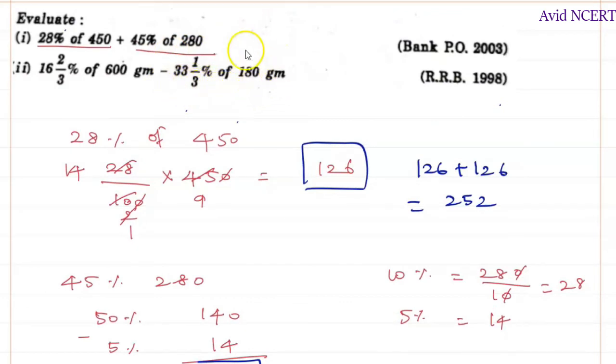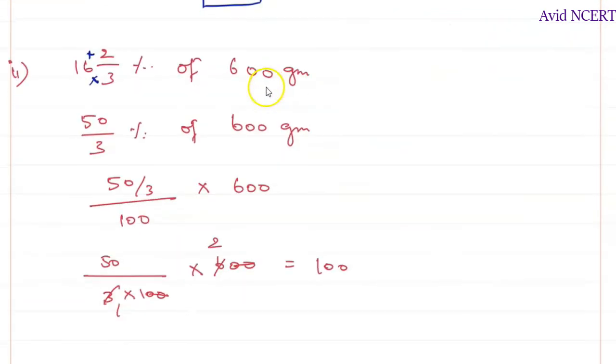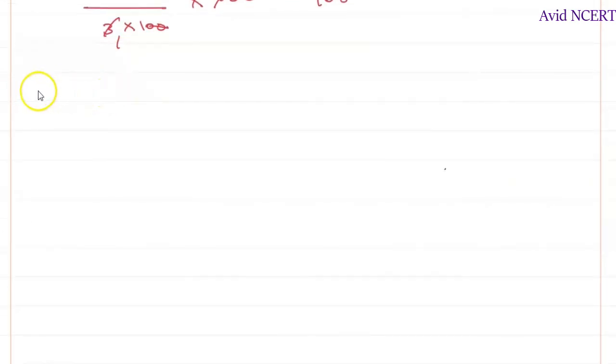Now we have to find the value of the second term, which is 33 and 1/3 percent of 180 grams. So 33 and 1/3 percent of 180 grams. Same thing: 33 times 3 is 99, plus 1 is 100. So 100 over 3 percentage of 180 grams.